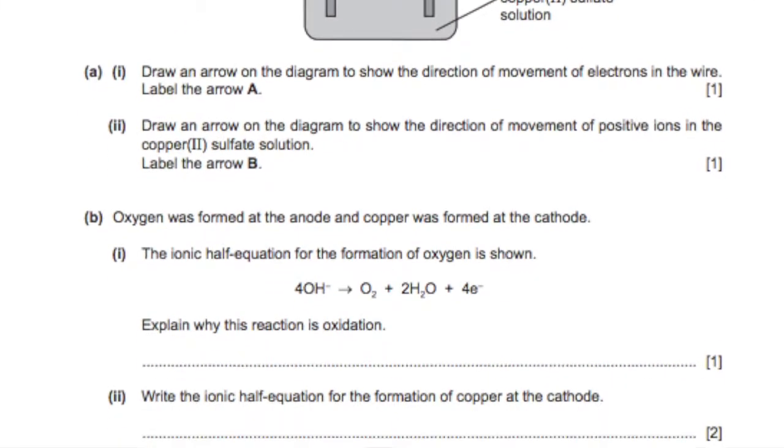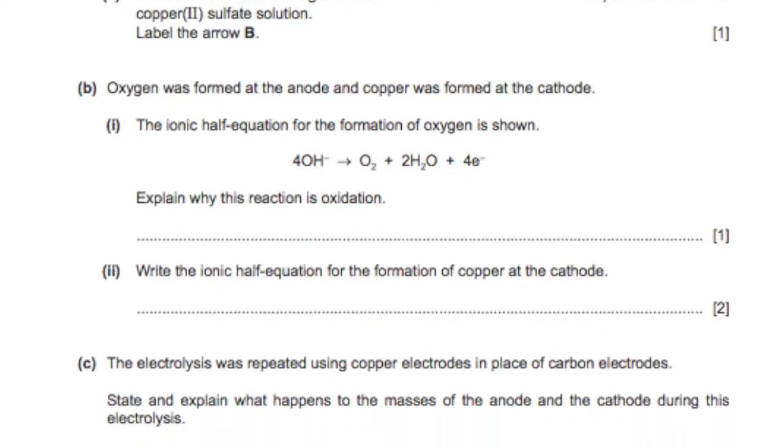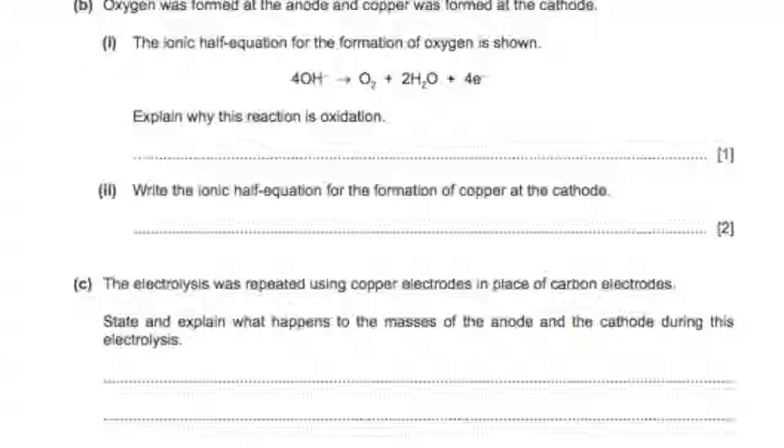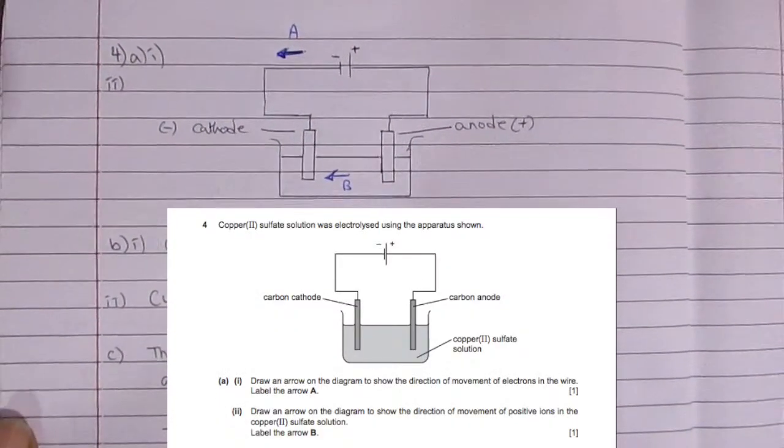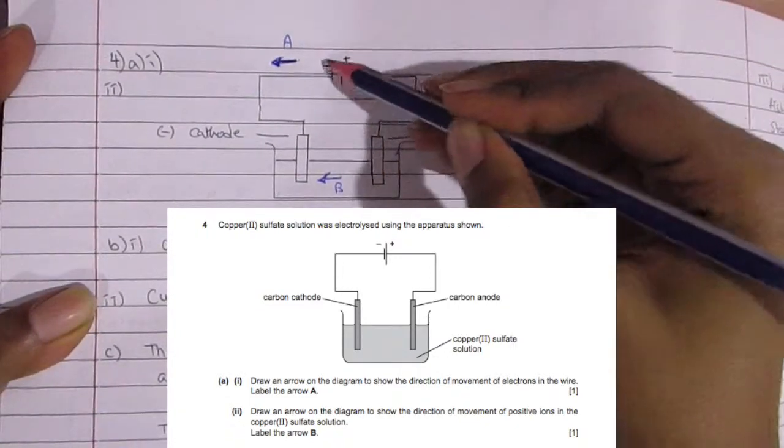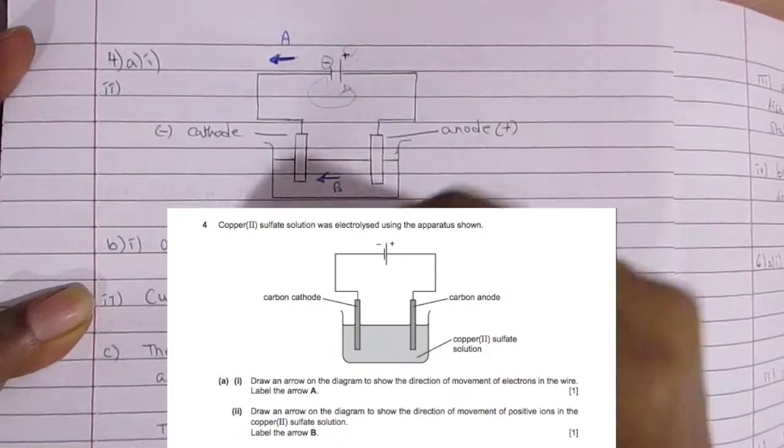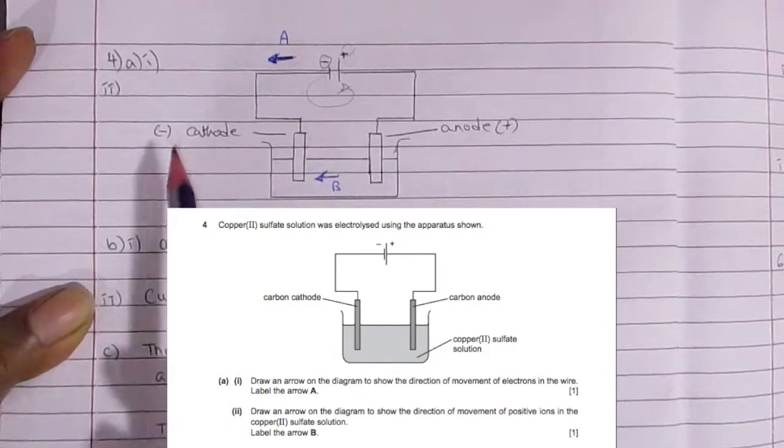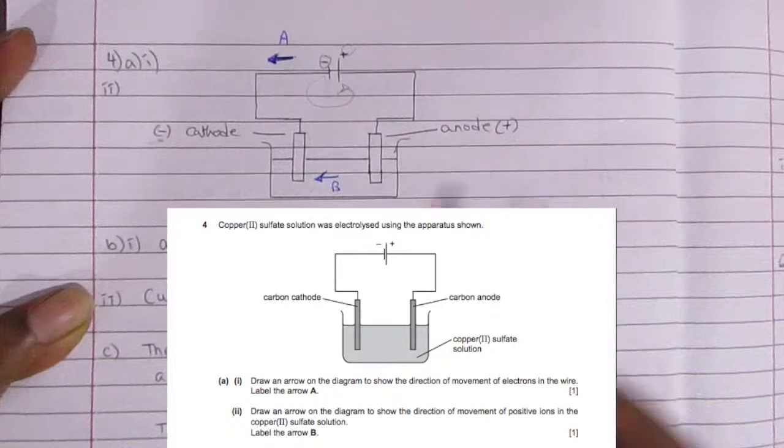Hey guys, welcome back to my YouTube channel. In today's video we'll be solving the final four questions. For question four, they're asking us for the direction of the electrons. The electrons are going to move only in the wires and not in the solution or the electrolyte, from the negative terminal of the battery onto the positive.